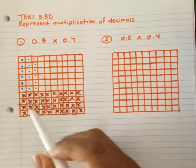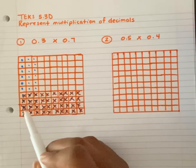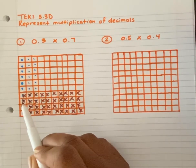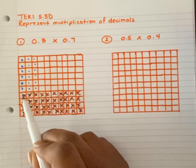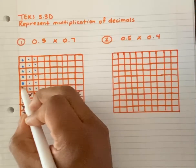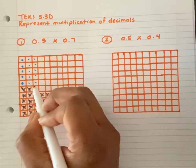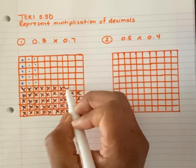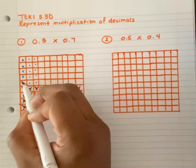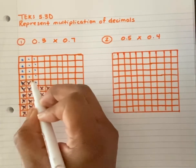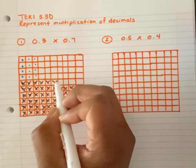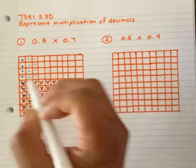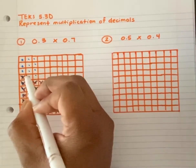So far I have 1 tenth, 2 tenths, 3 tenths, 4 tenths. I must keep going — 5 tenths, 6 tenths, 7 tenths.